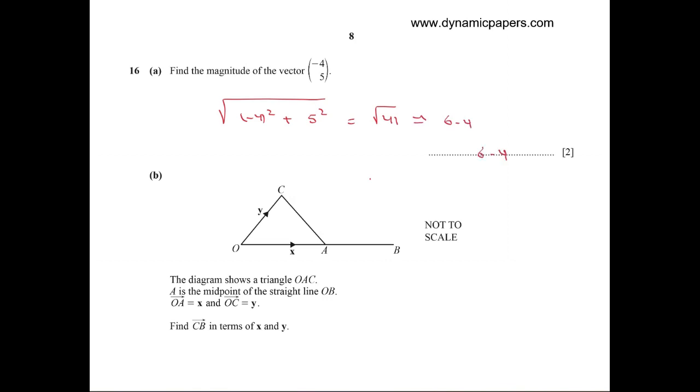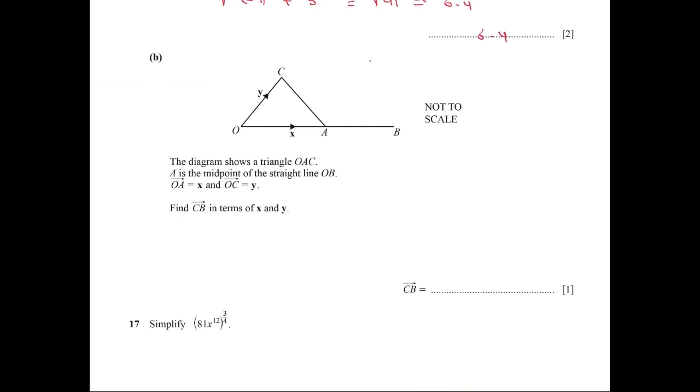Part B: A is the midpoint of OB, so OA equals x, then AB is also equal to x with the same direction. OC equals y. Find CB in terms of x and y.